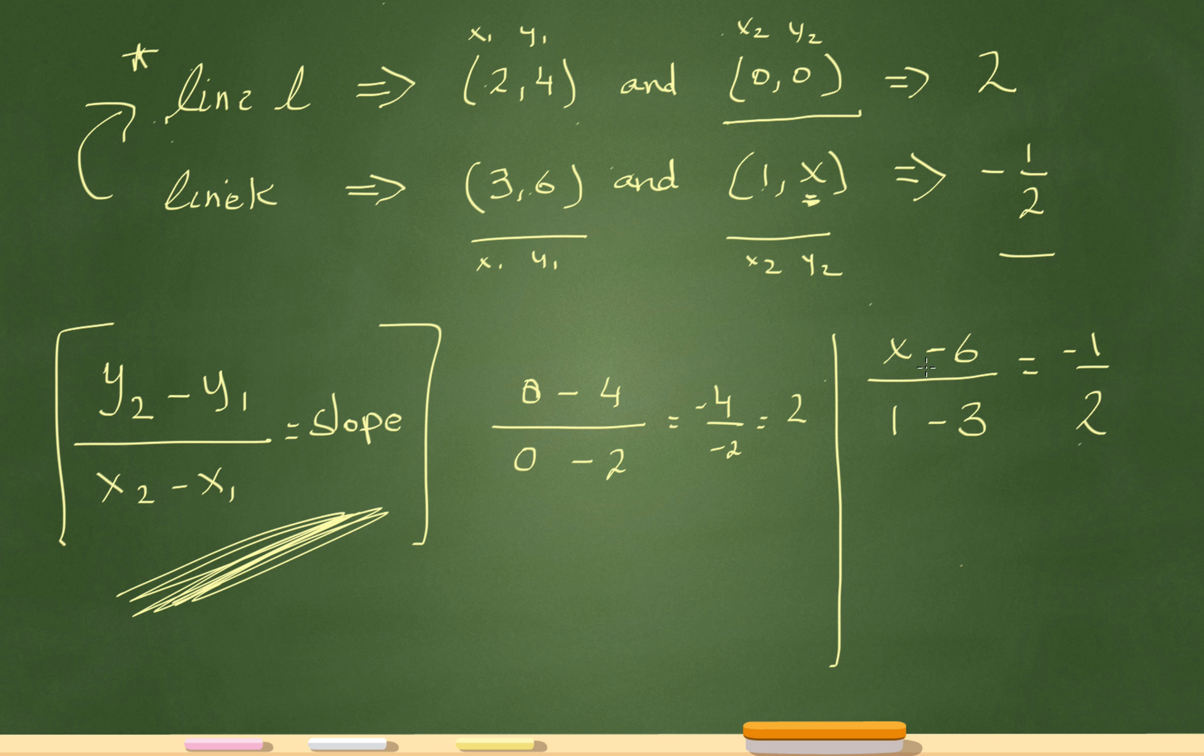Now I'm going to cross multiply and solve for my x. So the 2 is going to get multiplied right there, so that will be 2x - 12. That 2 gets multiplied to the x and the -6. And now 1 - 3 times -1, which will be -1 + 3. Or you know what, let's do this this way. To make it a little bit less confusing, I know that 1 - 3 over here is -2, right? So I'm going to erase that and put that as -2. And -2 times -1 is positive 2.